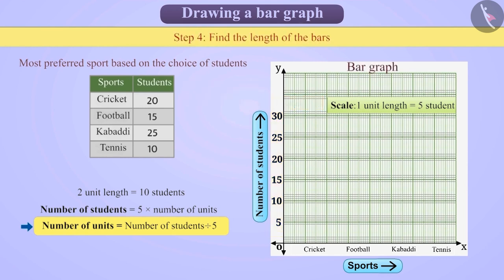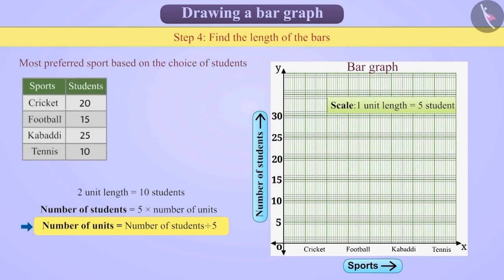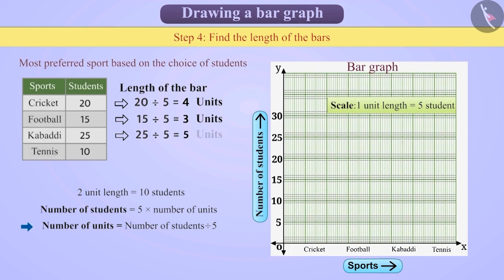Step 4: So, let's find the length of the bars. Cricket: 20 divided by 5 is equal to 4 units. Football: 15 divided by 5 is equal to 3 units. Kabaddi: 25 divided by 5 is equal to 5 units. Tennis: 10 divided by 5 is equal to 2 units.